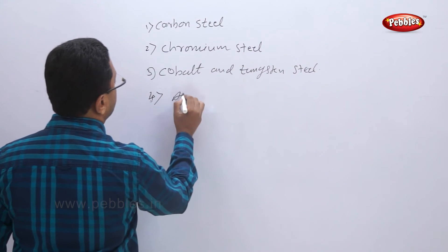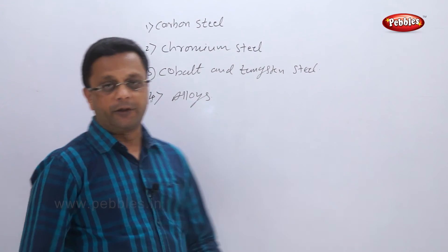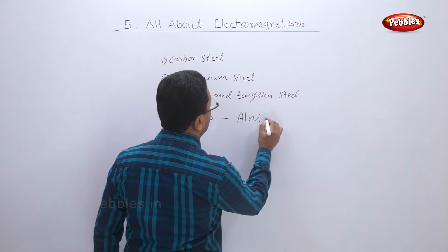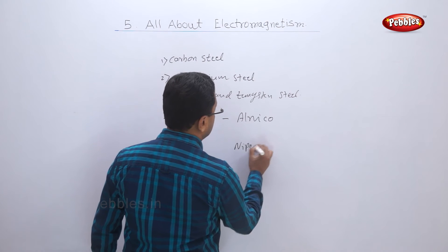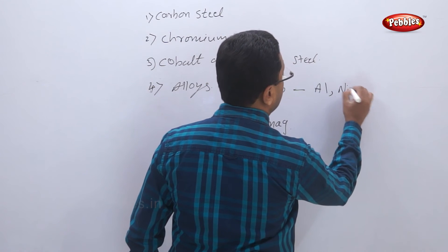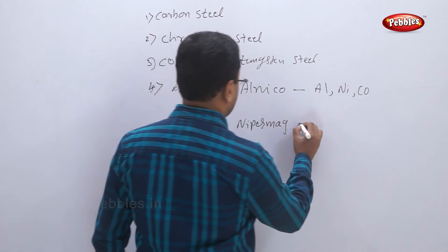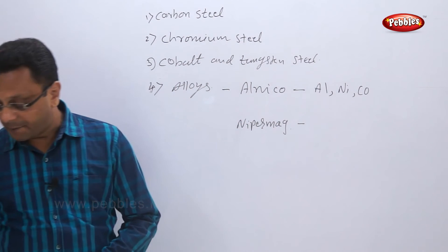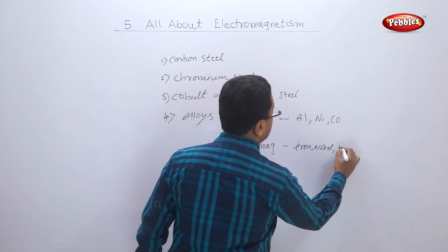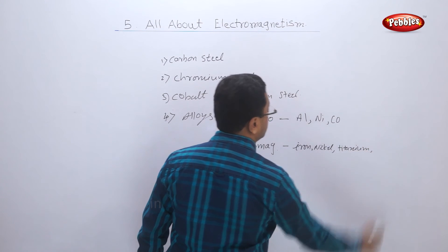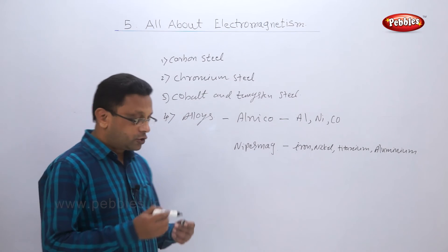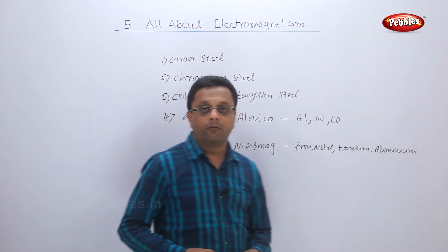Some alloys are also used. One alloy is Alnico and another alloy is Nippermag. As the name suggests, Alnico is made by aluminium, nickel, and cobalt, whereas Nippermag is made by iron, nickel, titanium, and aluminium. These two alloys are majorly used in the industry to make permanent magnets.